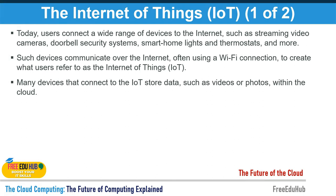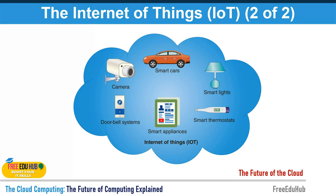These IoT-connected devices allow you to remotely monitor your home — you can check if lights are on or off, and even turn on the air conditioning before leaving the office. Many IoT devices store data such as videos and photos in the cloud. Examples include smart IoT chips in cars, surveillance cameras, doorbells, smart appliances, medical equipment, and lighting systems used in homes.